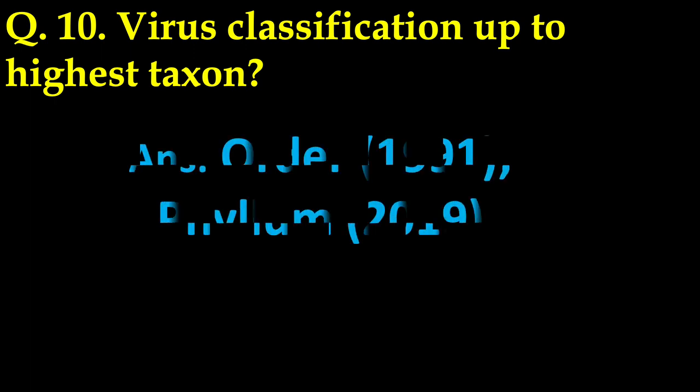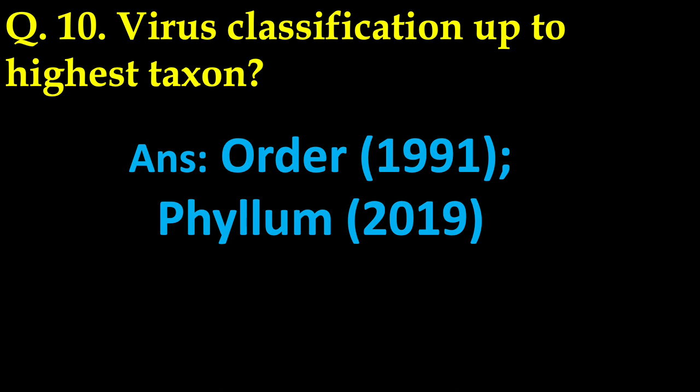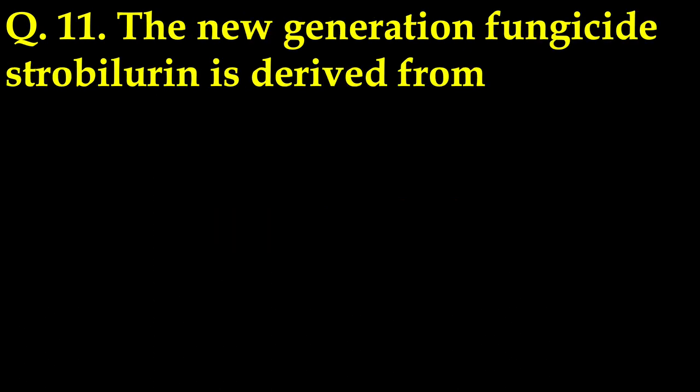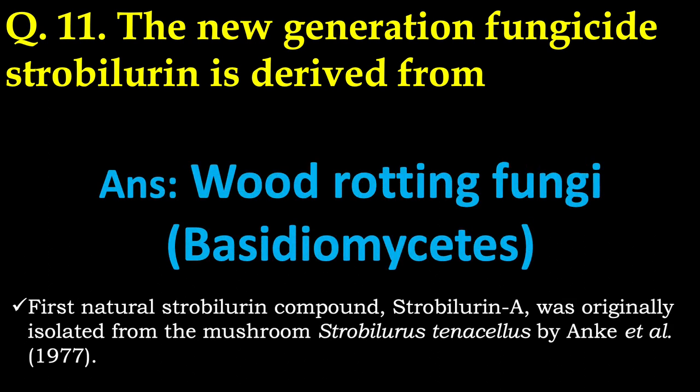Virus classification up to the highest taxon is the order, which was given during 1991, followed by phylum in 2019. Next question: the new-generation fungicide strobilurin is derived from — the correct answer is wood-rotting fungi from the class Basidiomycetes. The first natural strobilurin compound, strobilurin A, was originally isolated from the mushroom Strobilurus tenacellus by Anke et al. during 1977.